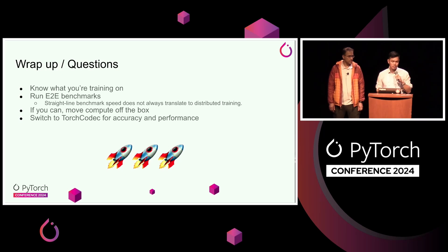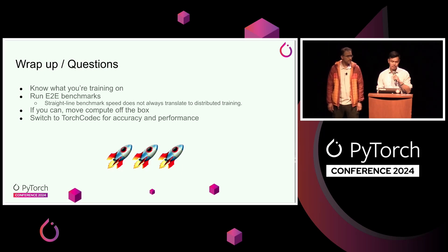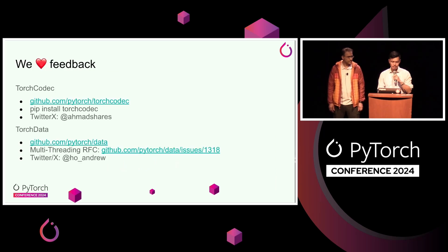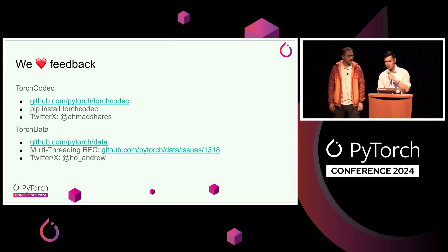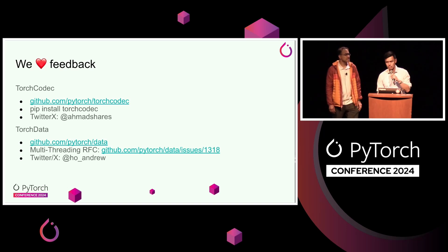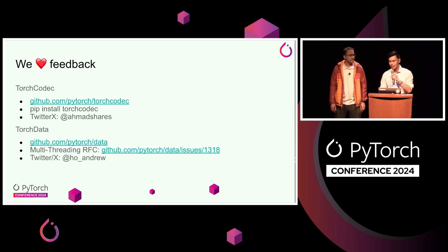If you can, move that compute off the box to remove your CPU bottlenecks — you can see a ton of gains that way. And check out TorchCodec for improved accuracy and performance. You can find us at github.com/pytorch/torchcodec for the TorchCodec project and at PyTorch/data for the Torch Data project. If you're interested in contributing to the future of data loading in Torch Data and PyTorch, come check out the RFC on what we're building. You can also find us on Twitter, GitHub, and on the PyTorch Slack.